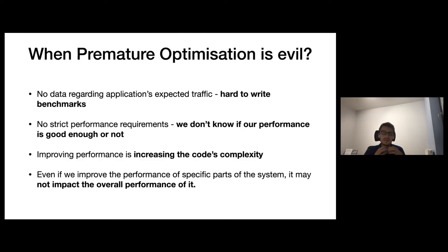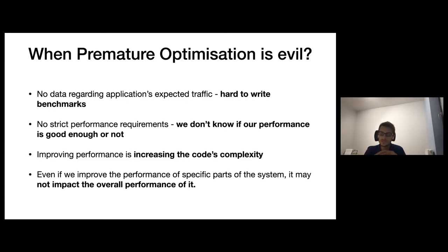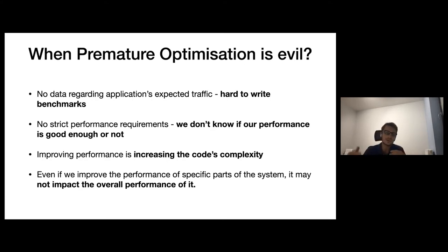When optimizing the performance of some code path, we are often increasing its complexity. This additional complexity arises from changing the code to be performance optimized, and sometimes we need to write parts of it in a specific way. In those parts of the system, we are trading off performance over complexity — and it may be code complexity, but also maintenance or system complexity of the components that we are using.